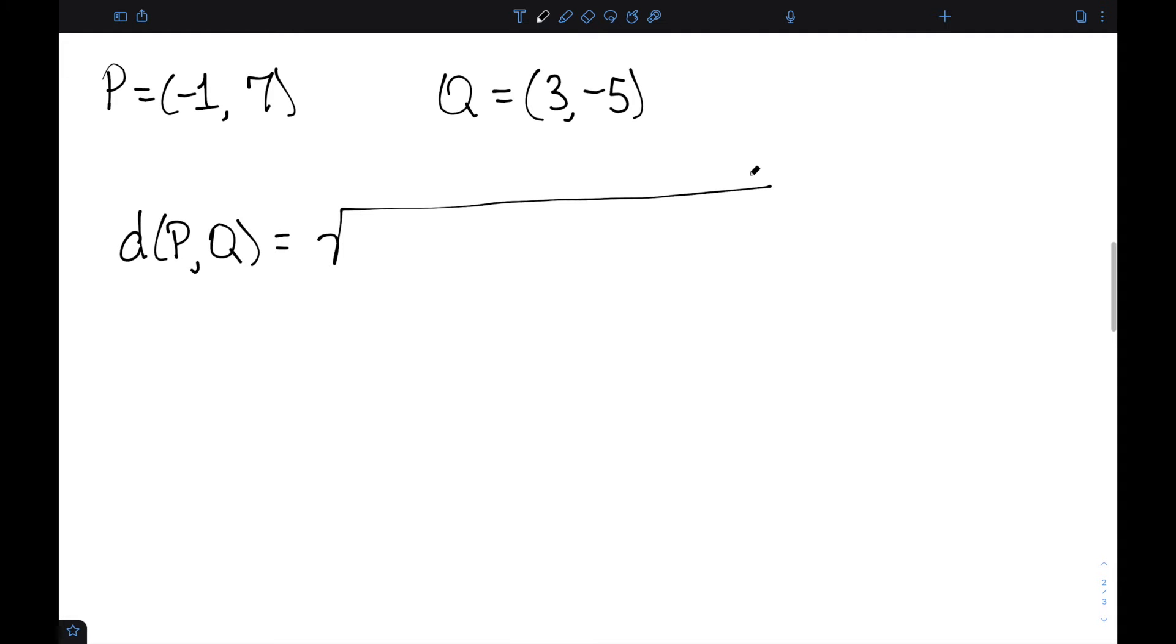This is the square root of... we have x2, y2 for Q, and x1, y1 for P. So we have x2, which is 3, minus x1, so minus (-1) squared, plus y2, which is -5, minus y1, which is 7, squared.